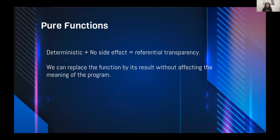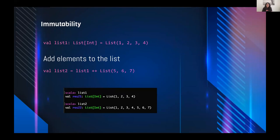If we have deterministic and side-effect-free functions, we satisfy the referential transparency criteria, which means we can replace the function call with its evaluation result without affecting the meaning of the program. This guarantees that we can test the function. For immutability, we use immutable data types — operations should map input values to output values rather than changing data in place.